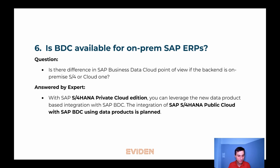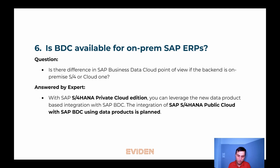So it sounds wonderful — but is there any catch? Well, the thing is that all the new features related to data products and Insight Apps will be available only to customers running SAP S/4 in RISE. This means customers running private cloud editions of SAP S/4 HANA will have access first, and then hopefully public cloud S/4 HANA customers will get access soon. On the other hand, customers running SAP ECC or SAP S/4 on-premise won't be able to access the newly introduced SAP data products or the Insight Apps.